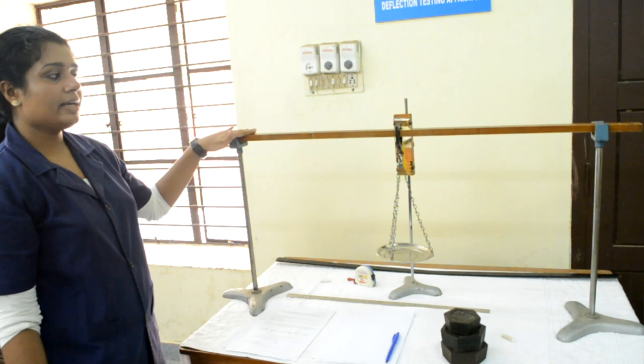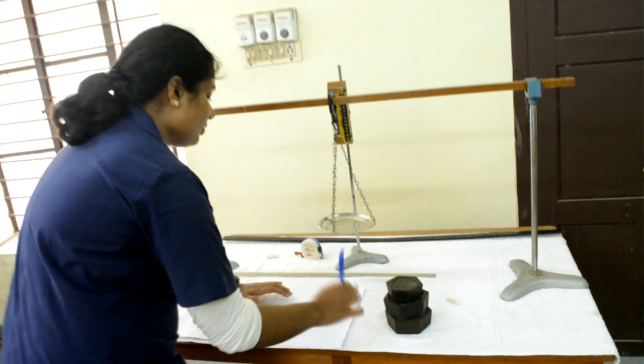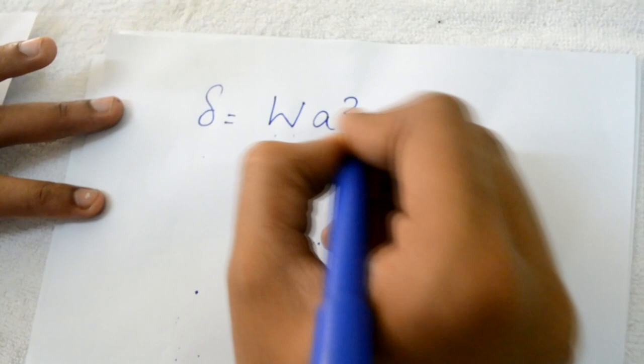Done for the central loading. We can do it for non-central loading as well. So there the formula of deflection changes to delta equals W A squared B squared by 3EIL.